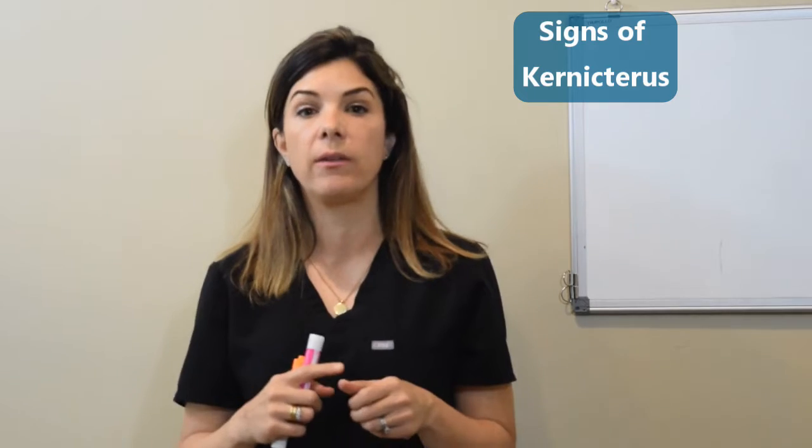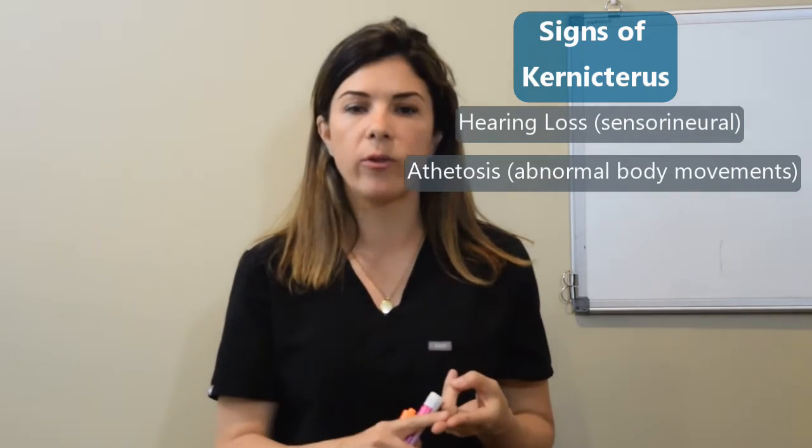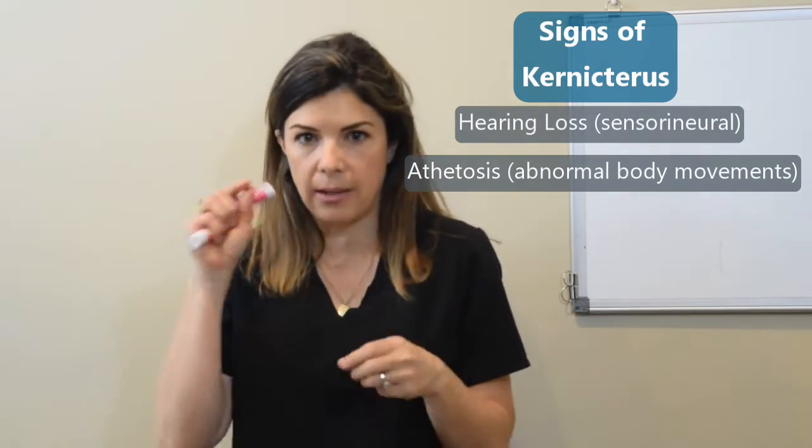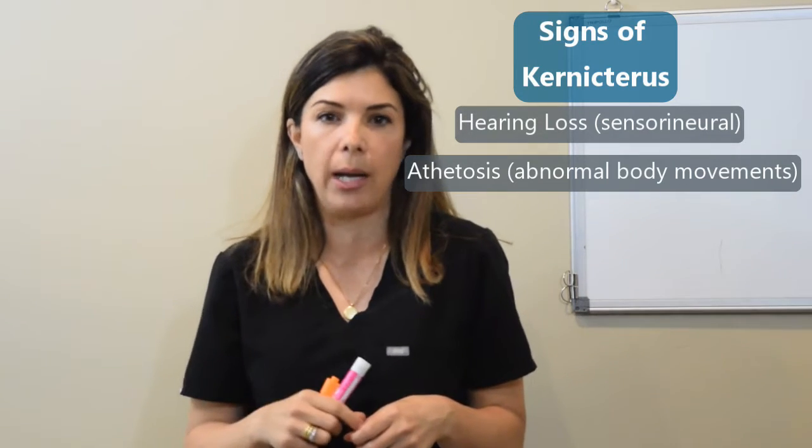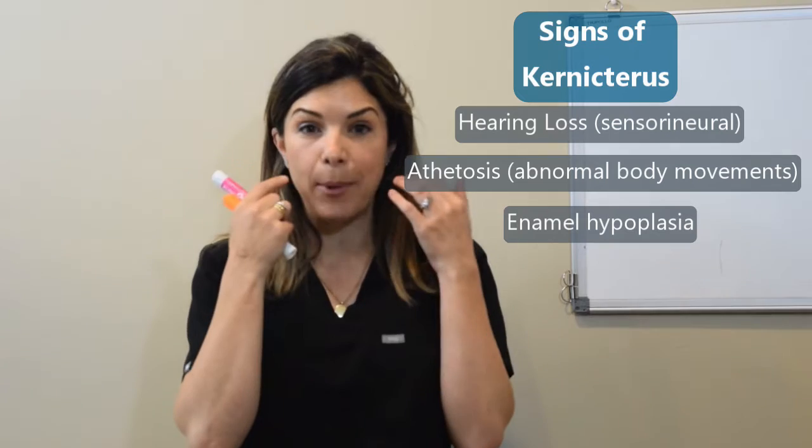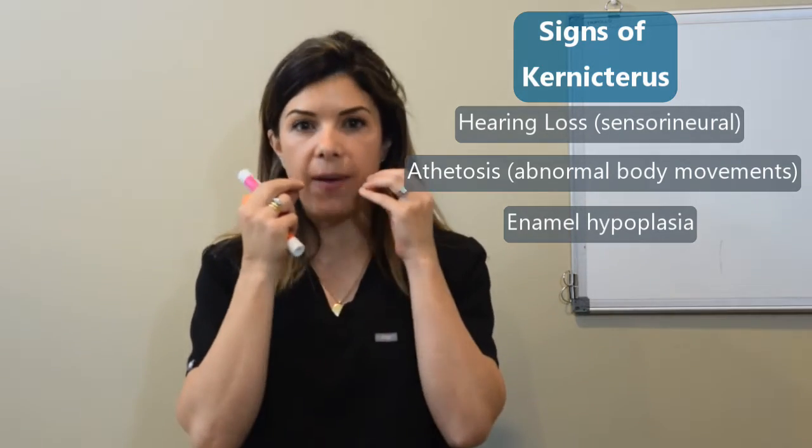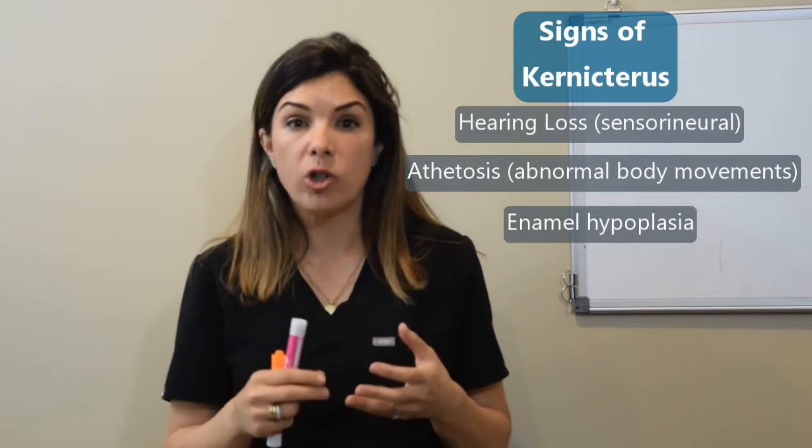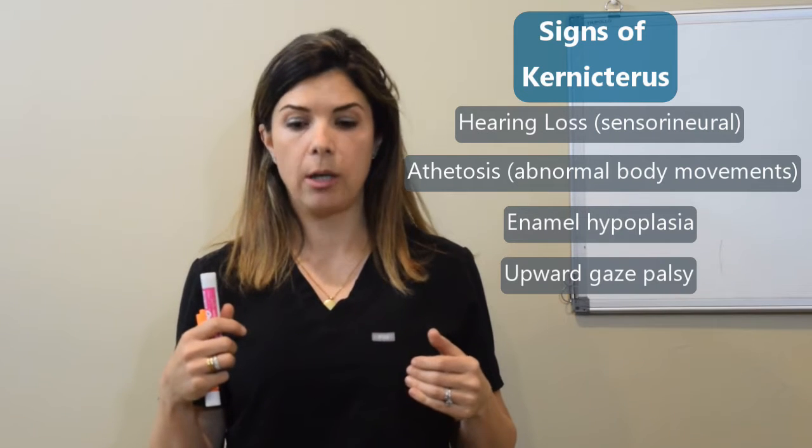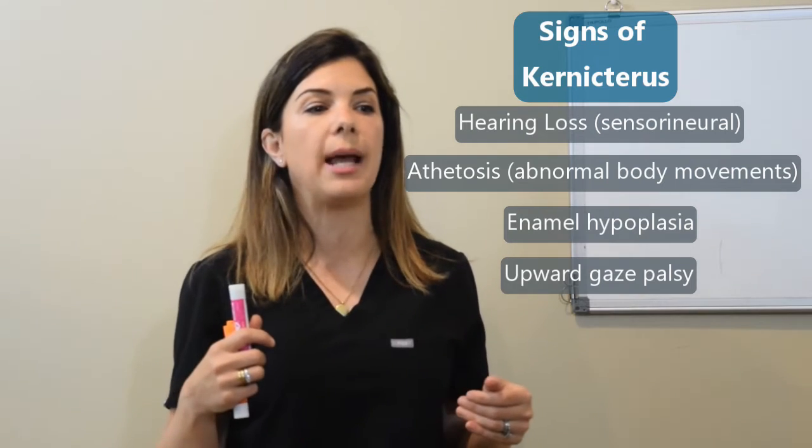The signs of kernicterus are hearing loss, sensorineural hearing loss, having athetosis which is abnormal movements, which is logical because it's affecting the motor centers in the brain. It can also affect the dental enamel and you can end up with enamel hyperplasia so it can really affect your teeth and then you can end up with upward gaze palsy. So you literally can't look upwards and these patients are kind of stuck always looking downwards.